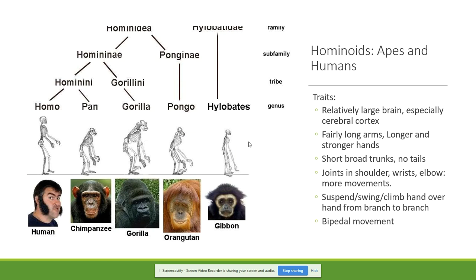Our next group is the hominoids, which include the apes and humans. Remember, for the exam I'm interested in the differences between groups. Hominoid traits include: relatively large brains, especially the cerebral cortex; fairly long arms; longer and stronger hands; short, broad trunks; no tails; and joints in the shoulder, wrists, and elbow that allow for more movement. Apes, including humans, have more joints and more bones that allow for greater range of movement.